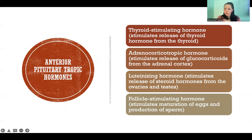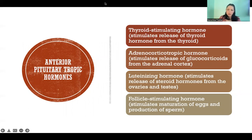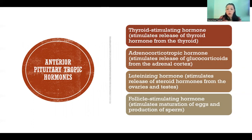Thyroid-stimulating hormone stimulates release of thyroid hormone from the thyroid. Adrenal corticotropic hormone stimulates release of glucocorticoids — so primarily cortisol — from the adrenal cortex.